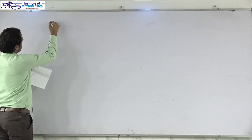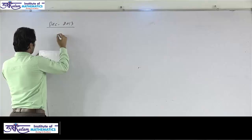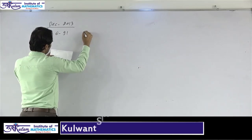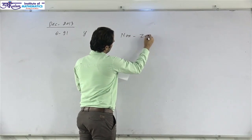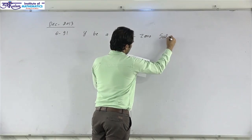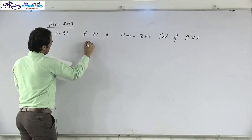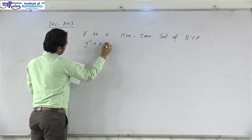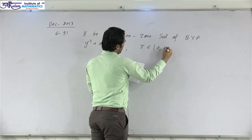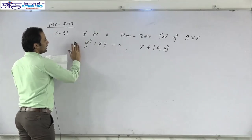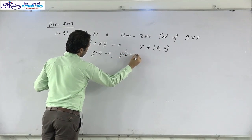Let us start with another question. This is a question from December 2013, question number 91. Let y(x) be a non-trivial or non-zero solution of the boundary value problem y'' + x·y = 0, where x belongs to the closed interval [a, b], with boundary conditions y(a) = 0 and y(b) = 0.